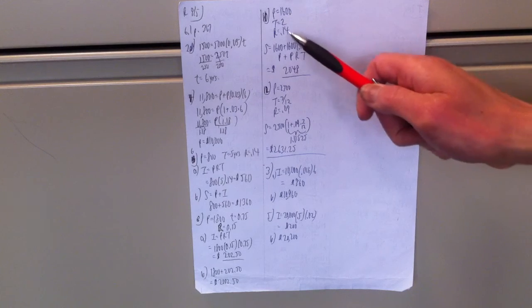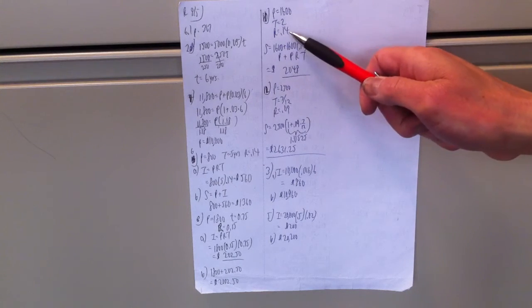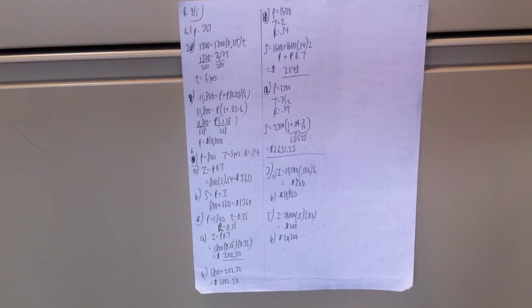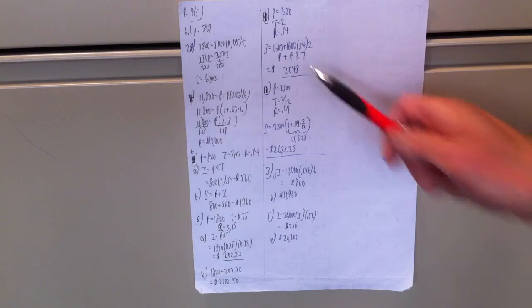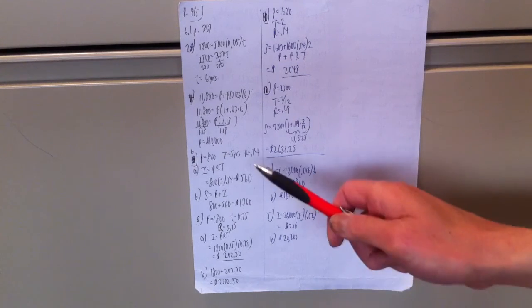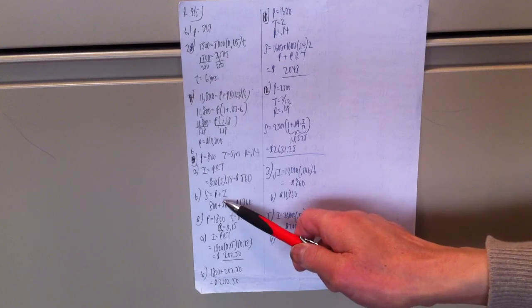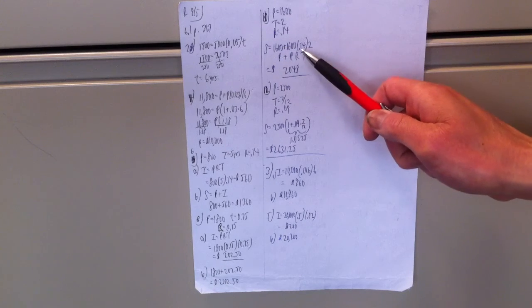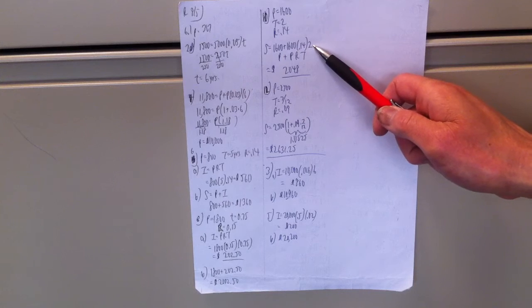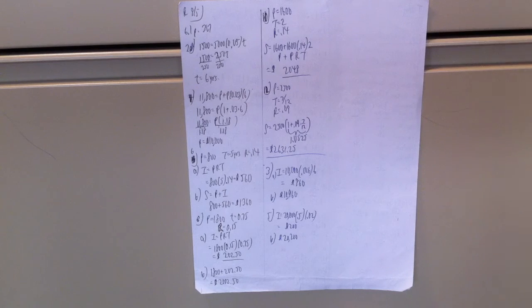Question 10. The principal is 1600. Time is 2 years. Rate is 14% or 0.14. This time I'm plugging into the formula S equals P plus PRT, which is a variation of S equals P plus I, since I is equal to PRT. So 1600 plus 1600 times 0.14 times 2. Punch it in your calculator and you get $2,048.